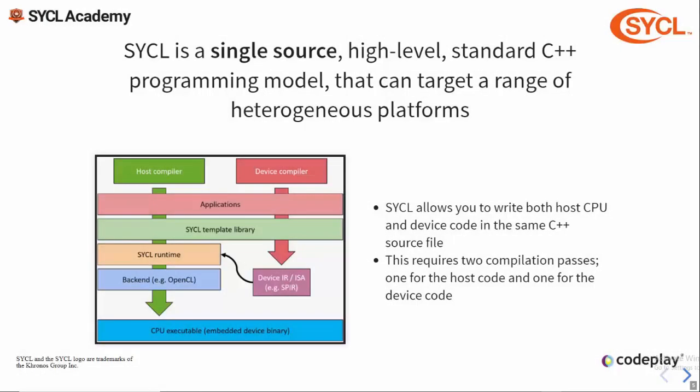Firstly, SYCL is single source. Unlike traditional C++ applications which have a single compilation path of a source file compiled into an object and then linked to create an executable, SYCL applications have two compilation phases — one for the host compiler and one for the device compiler. Unlike traditional heterogeneous programming models like OpenCL which have two separate sources, SYCL has a single source file containing both the host application code and the device code, all in C++.